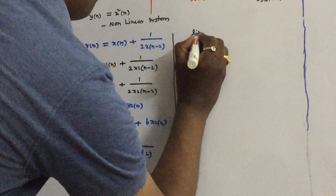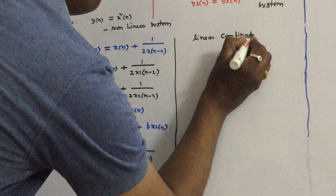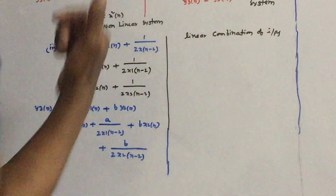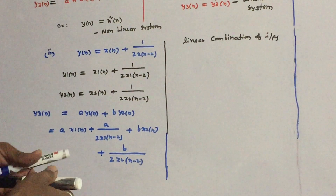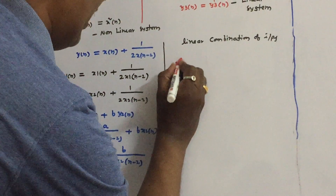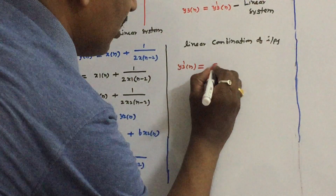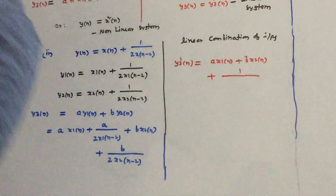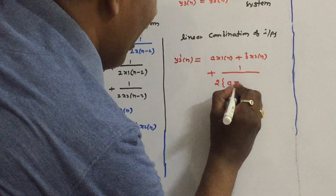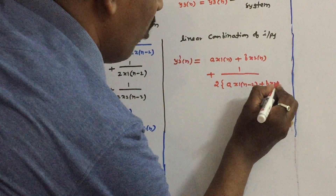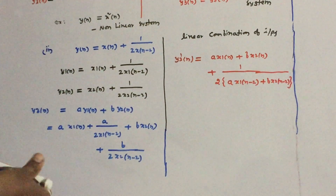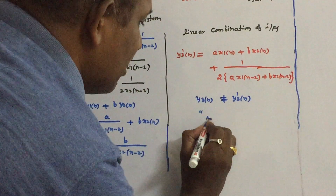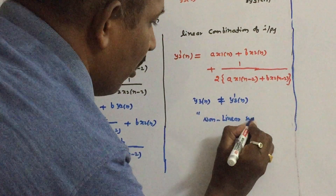Now let us apply the linear combination of inputs to the system. In place of x(n) we substitute a·x1(n) + b·x2(n). The same input is delayed by two samples. So y3'(n) = [a·x1(n) + b·x2(n)] + ½·[a·x1(n-2) + b·x2(n-2)]. From these two equations, y3(n) is not equal to y3'(n), so this is a non-linear system.